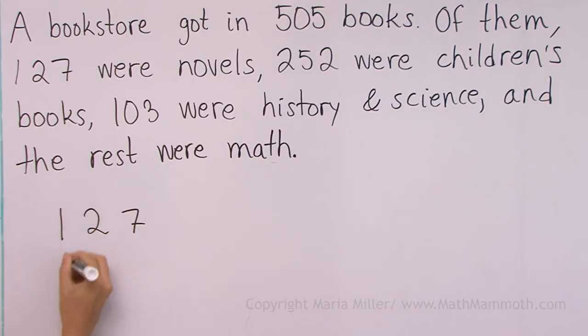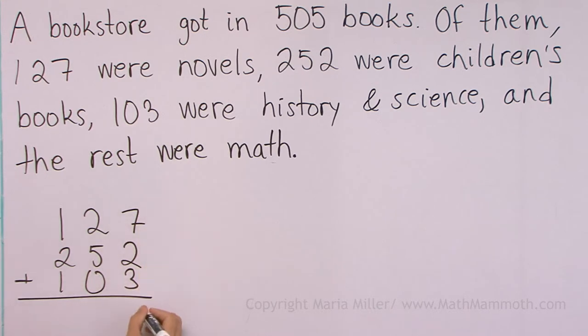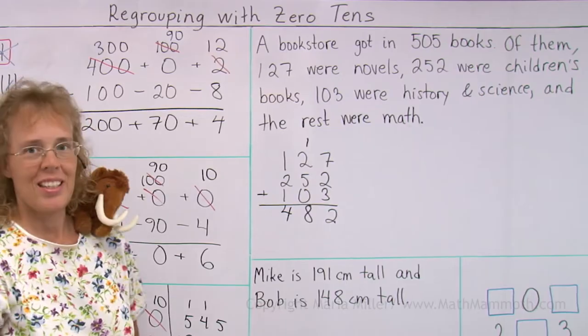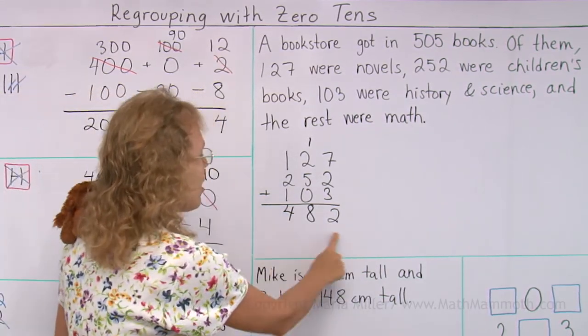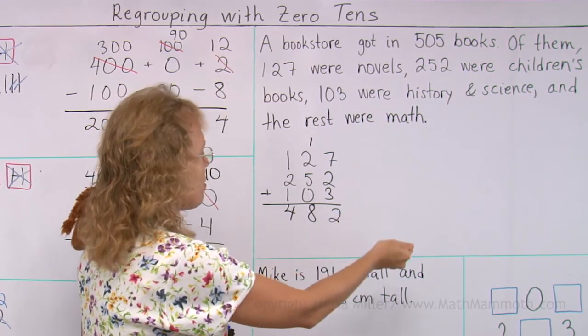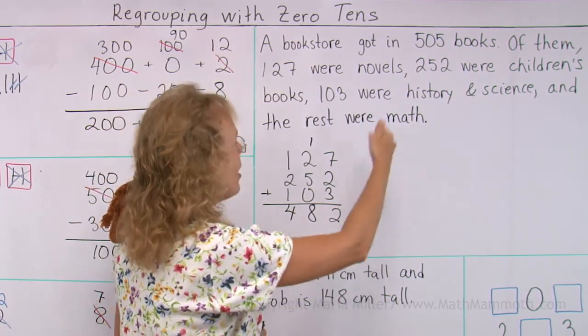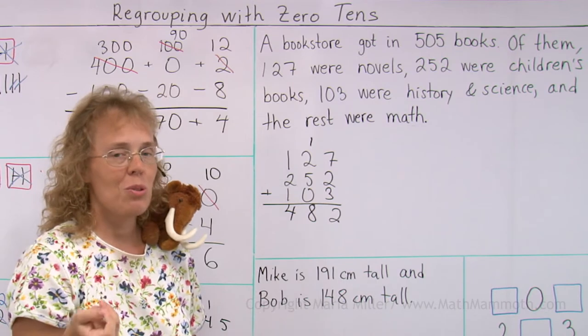The novels, and the children's books, and the history and science books. Let's find how many there are. Here's 5 and 7, 12, and here's 8, and here's 4. And now, this many are all other kinds of books, and the rest, there's some math books, and then 505 books in total.